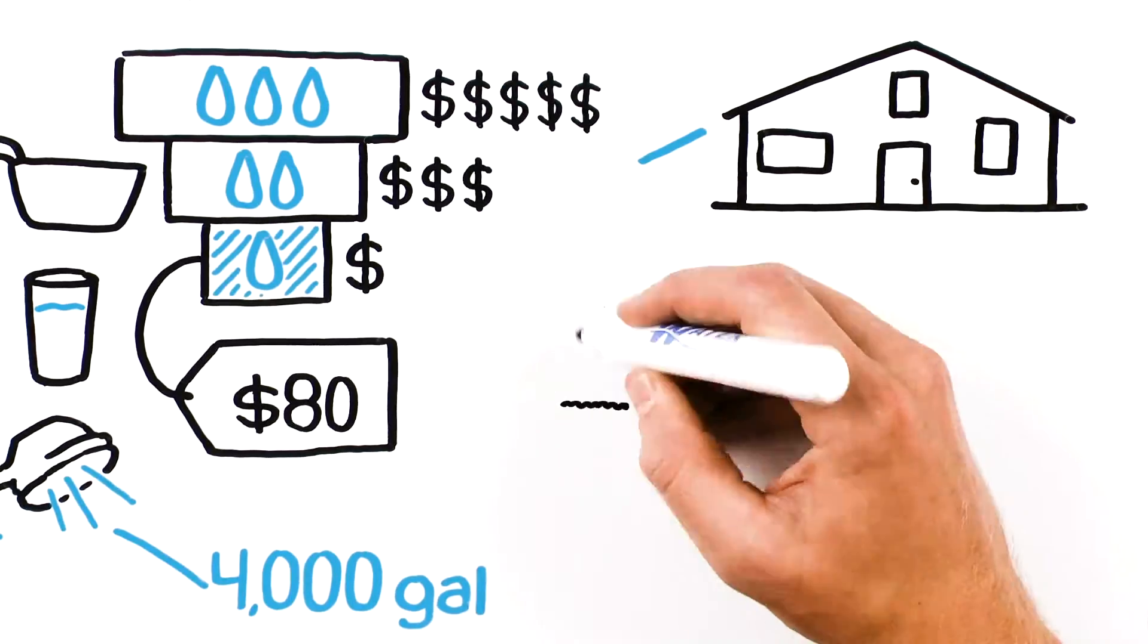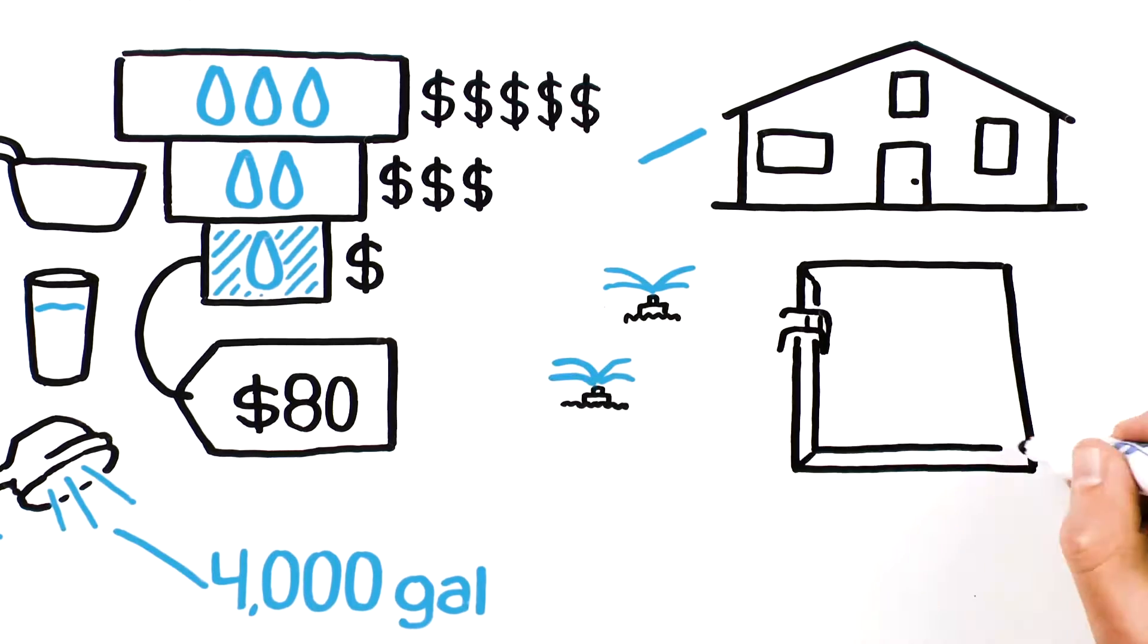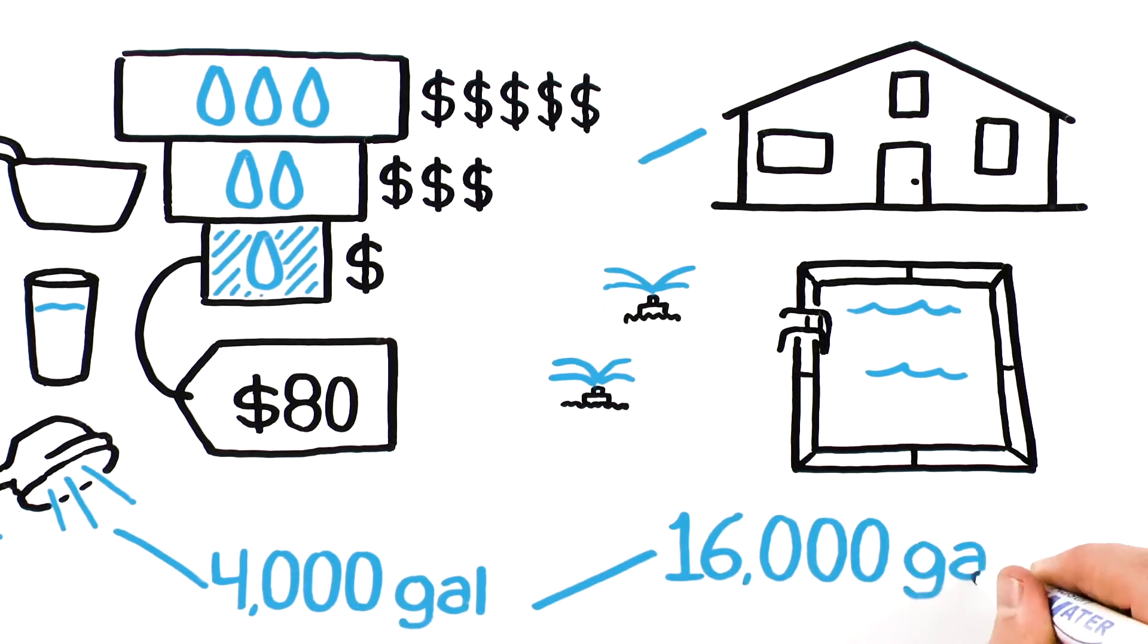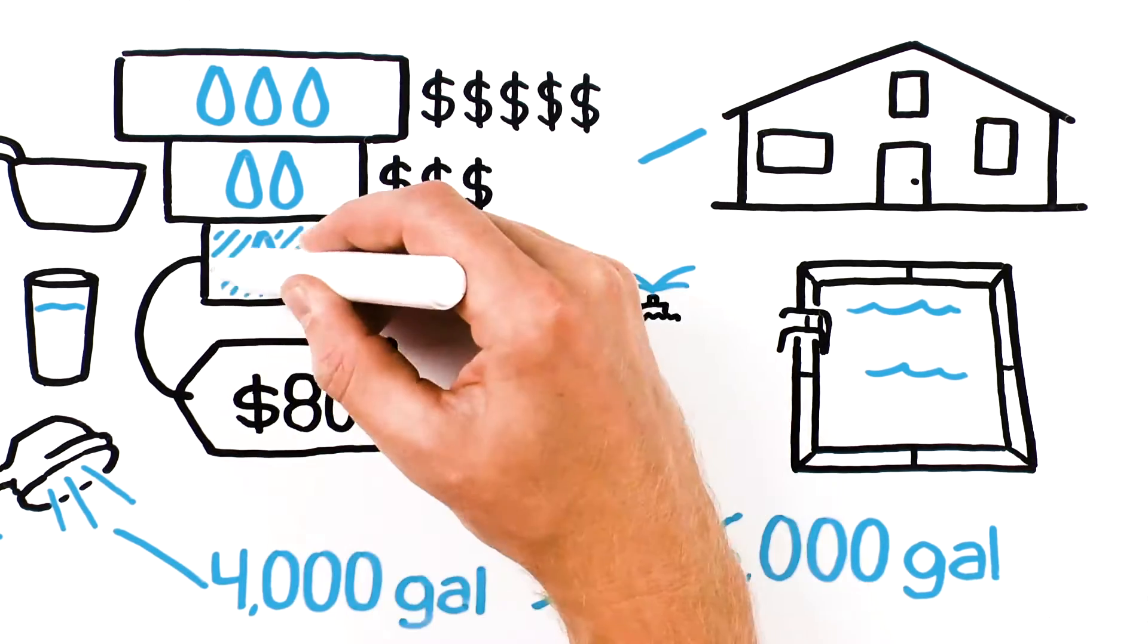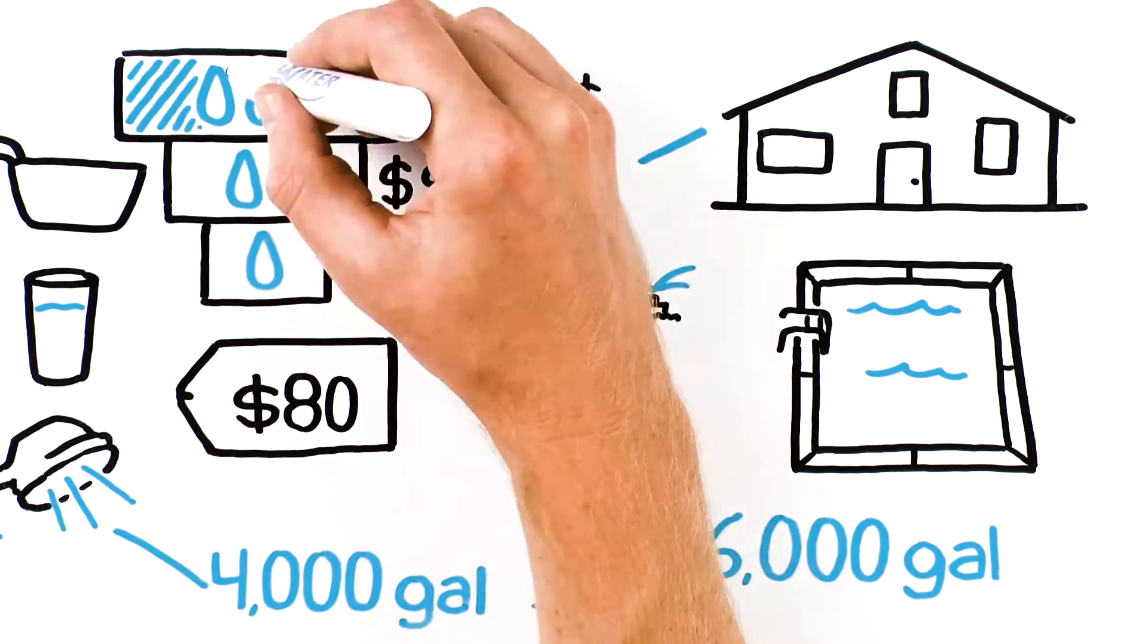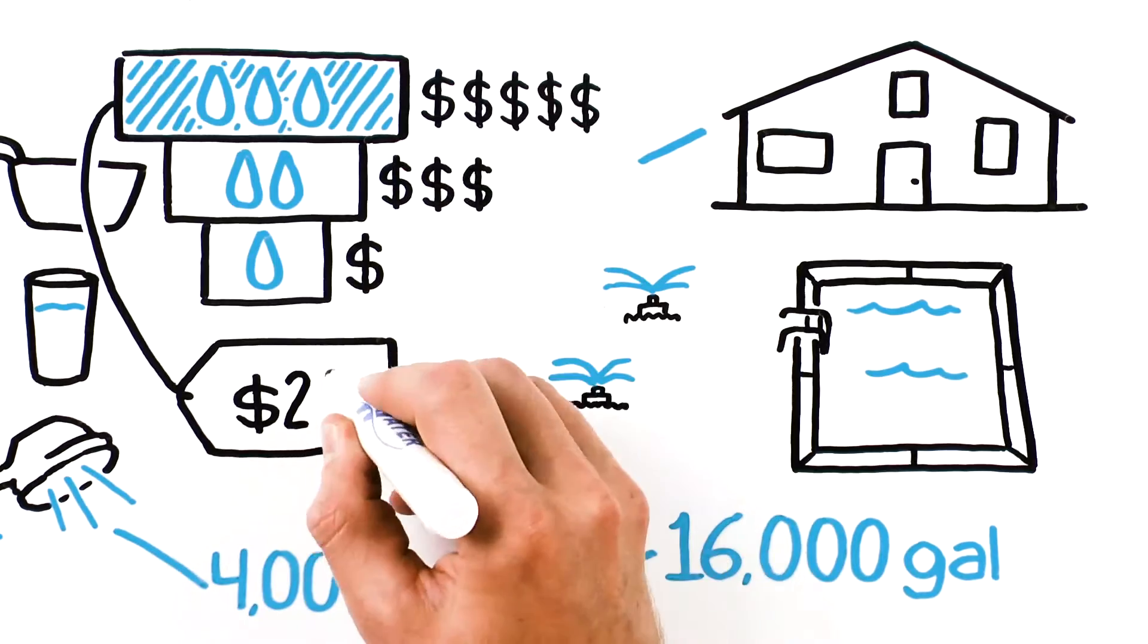Another household has an irrigation system and swimming pool that would generate about the same wastewater, but use 16,000 gallons of water per month. Using more water puts them in a higher rate tier, and their bill is around $200.